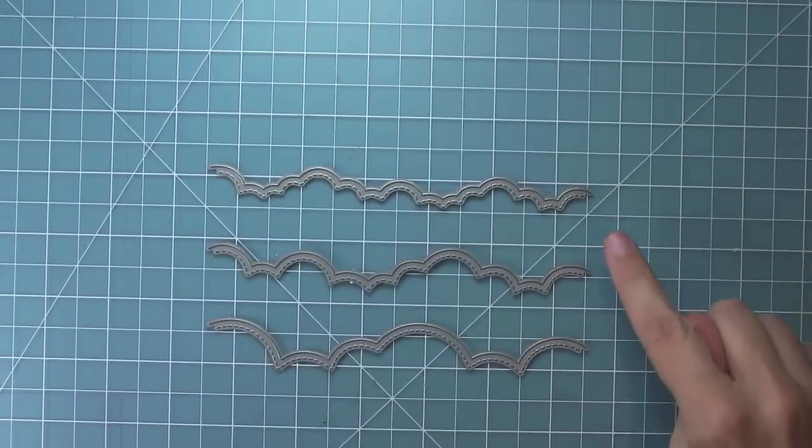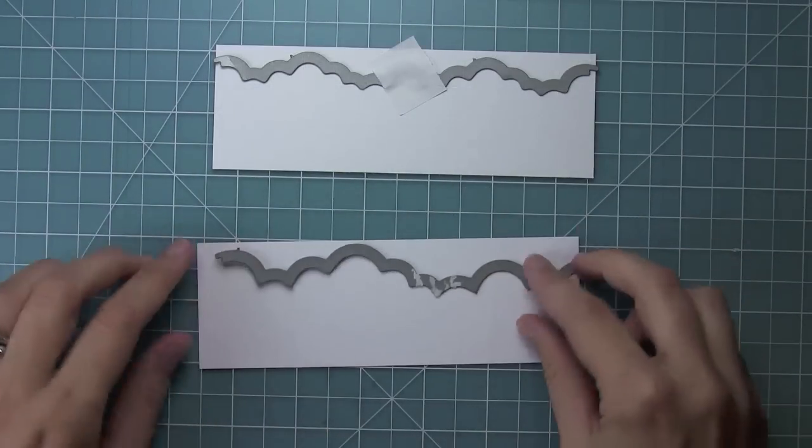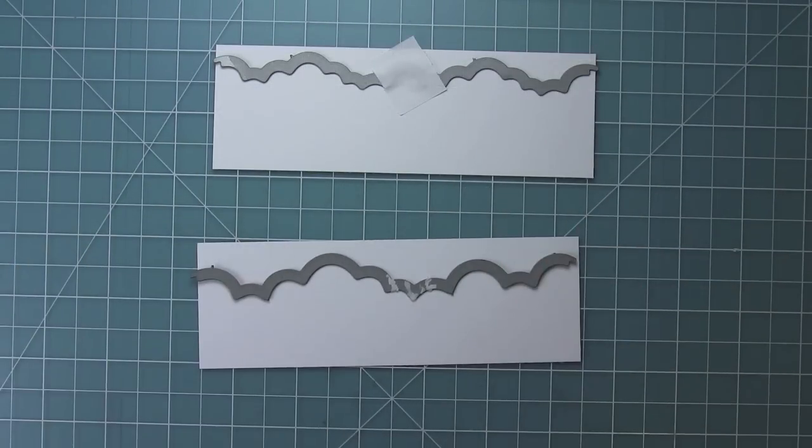Here are the Puffy Cloud borders. We have three sizes and the reason we did that is depending on your scene you might want small, medium or large, especially if you're using little tiny stamps or bigger images.